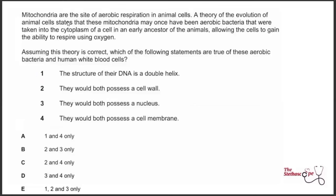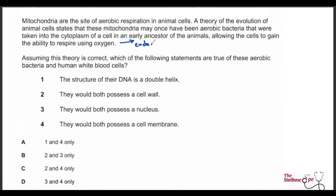Next question: mitochondria are the site of aerobic respiration in animal cells. A theory states mitochondria may once have been aerobic bacteria taken into the cytoplasm of an early ancestor — this is the endosymbiotic theory. Assuming this theory is correct, which statements are true of both these aerobic bacteria and human white blood cells? Statement one: their DNA has a double helix structure — by definition, all DNA is a double helix regardless of the organism, so this is correct.